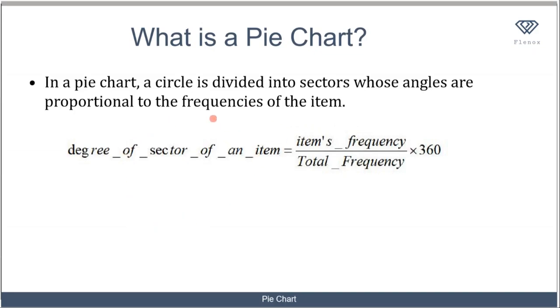In terms of a pie chart, we have this pictorial diagram in which we have a circle and the sectors in it represent the frequency of the item. So how do you calculate the degree of each sector?